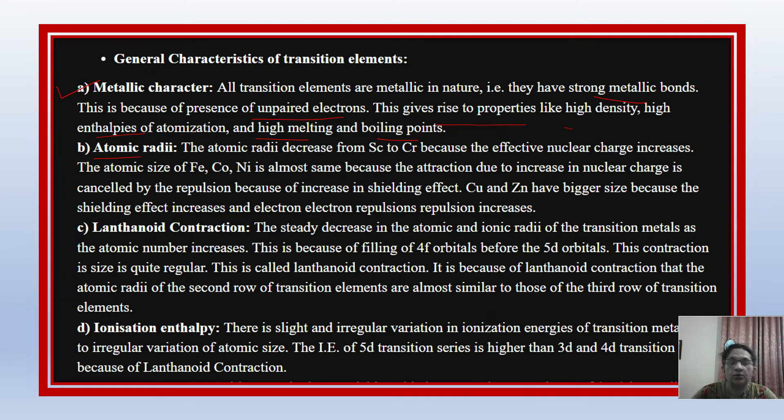Let's talk about atomic radii. As you know, going from left to right, the size of atoms decreases because the effective nuclear charge increases. Obviously, the atomic radii when going from left to right will decrease. The atomic size of ferrous, cobalt, and nickel is almost the same. This is because the increase in nuclear charge is cancelled by repulsion due to increase in shielding effect. There are two opposing forces: the nucleus's attractive force and the shielding effect. When these balance, the size remains similar and then decreases.